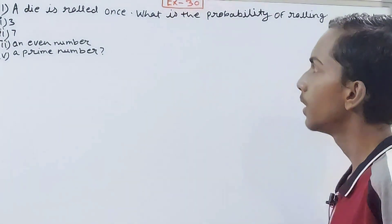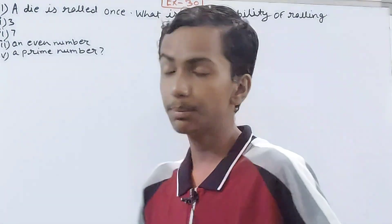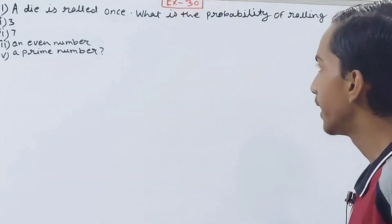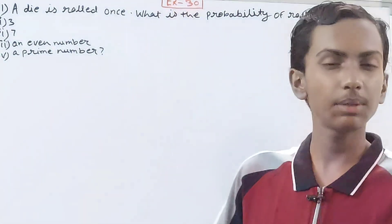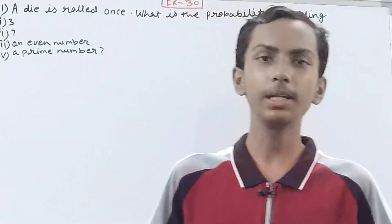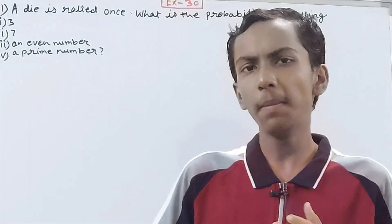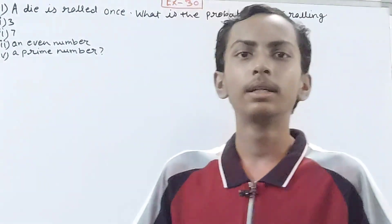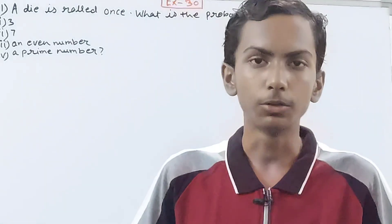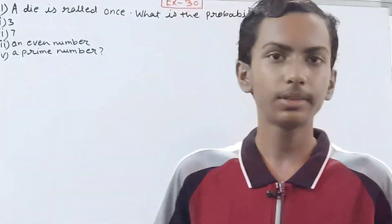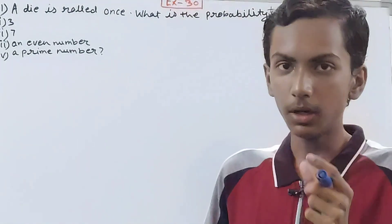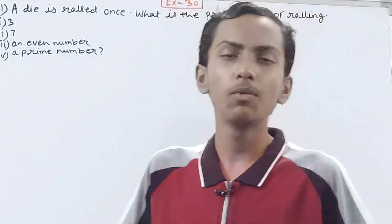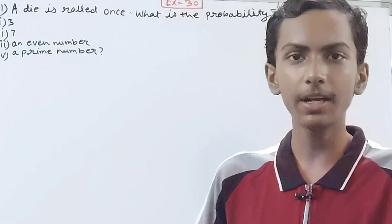The question says: a die is rolled once. What is the probability of rolling: first part, a 3; second part, a 7; third, an even number; and fourth, a prime number? This chapter is based on calculating the probability of any event. For example, if I guess it will rain tomorrow, there is some probability of that happening or not happening.